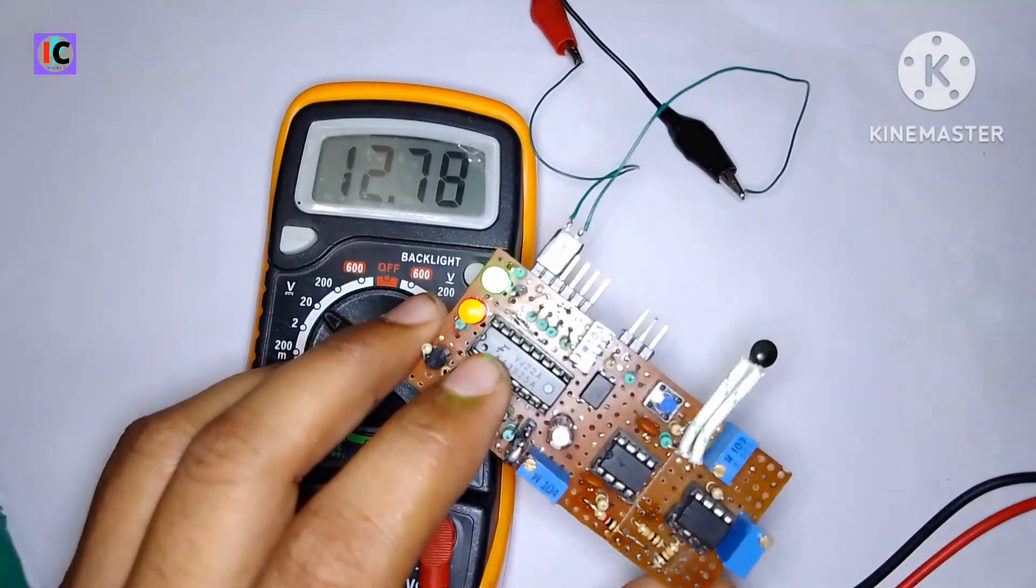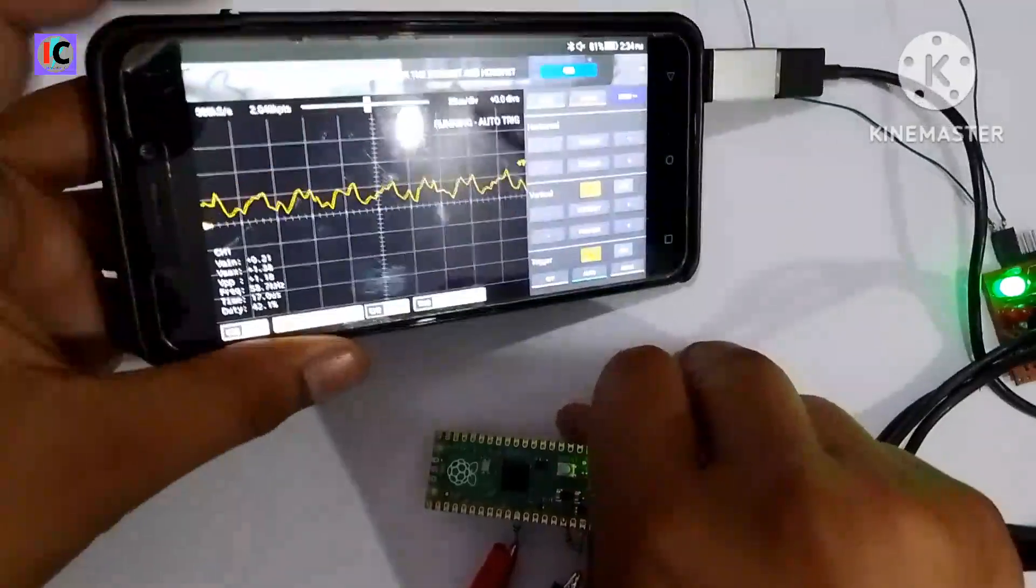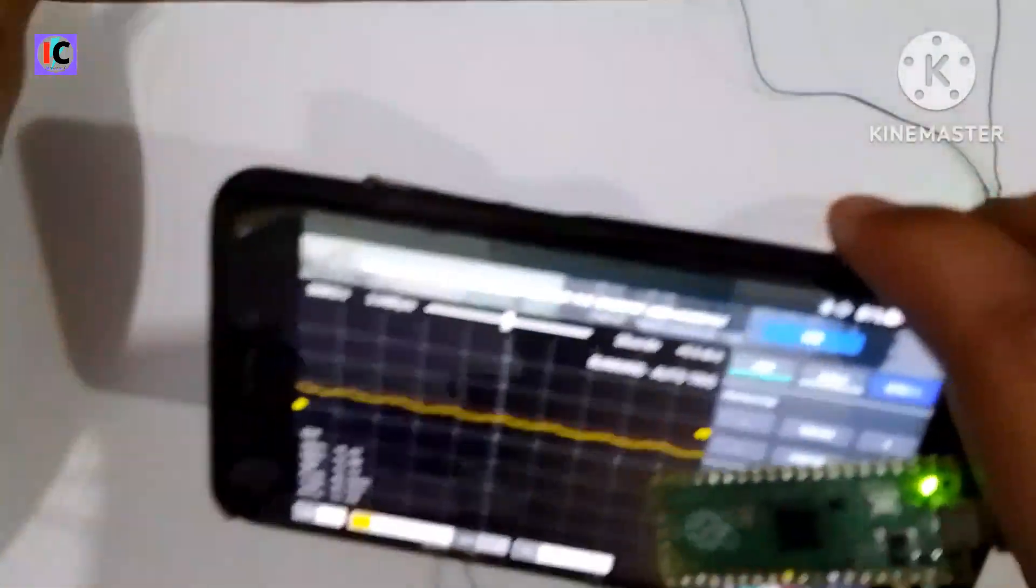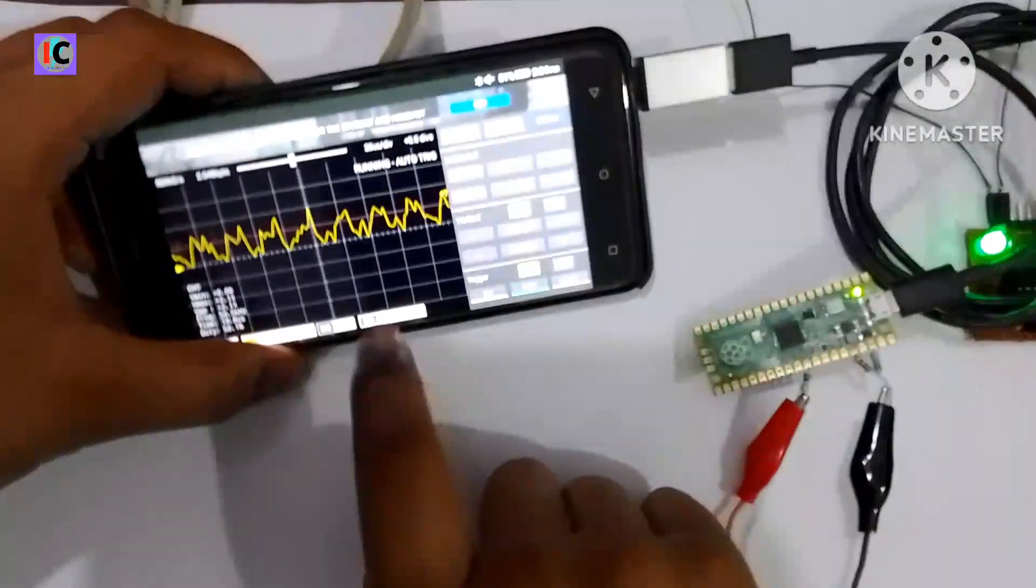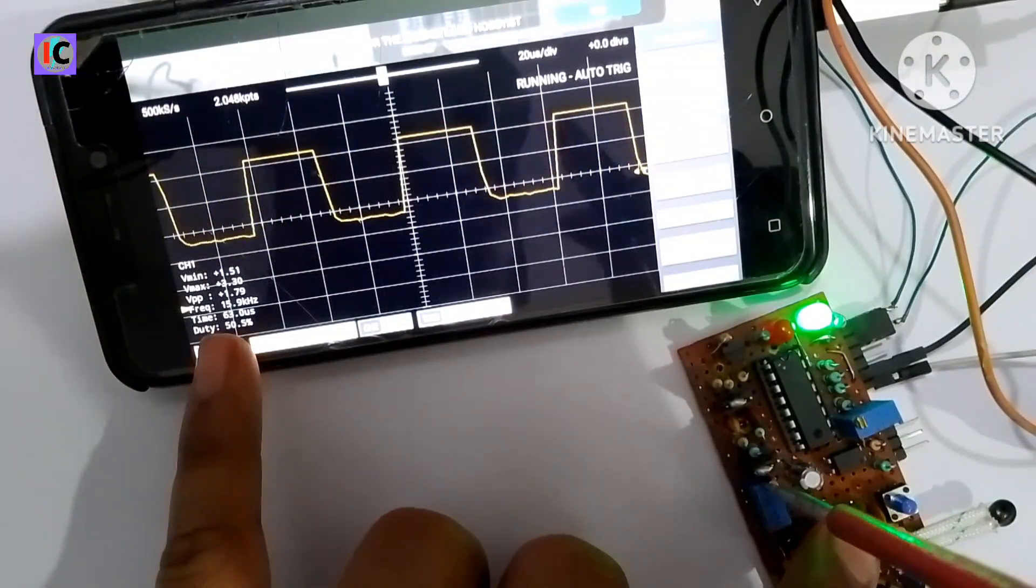This circuit works like this. You can see this oscilloscope which is made on Raspberry Pi. Now I'll show you how this duty cycle and frequency is working. The frequency is decreasing from 20 kHz to below.